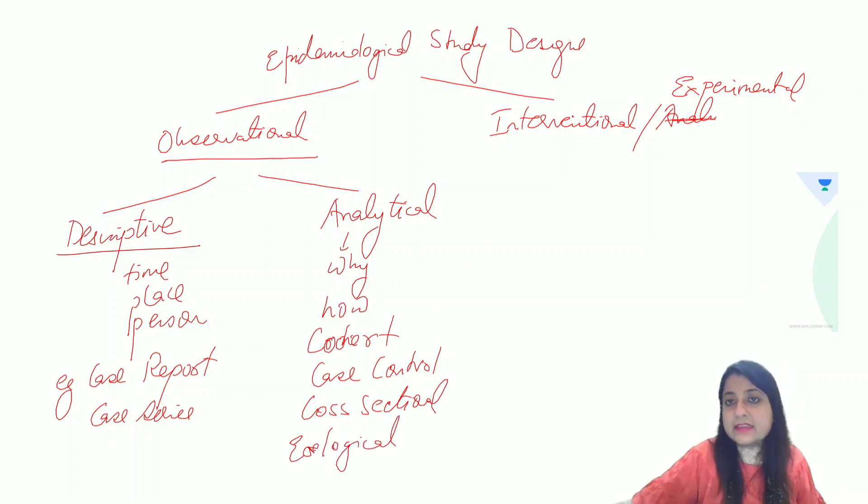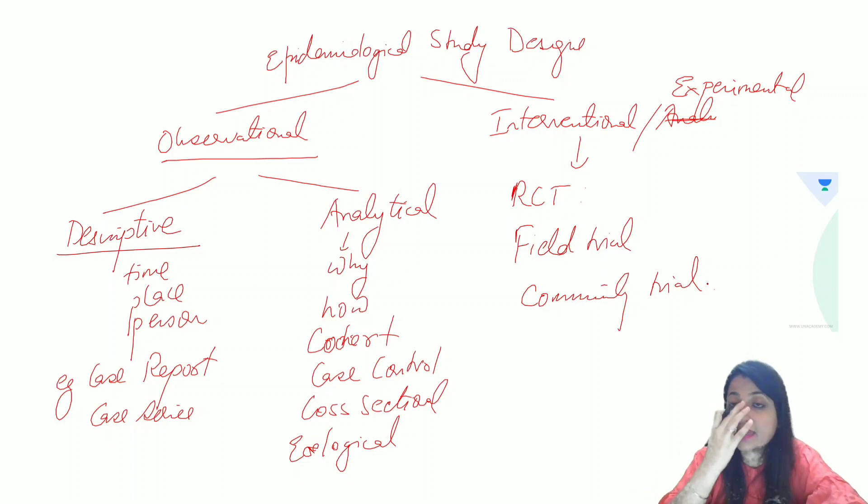These are all analytical study designs and when we talk about interventional, it is randomized control trial, field trial and community trial. Randomized control trials are phase 3 of drug trials, clinical trials. So we are doing an intervention. Group of patients are getting a new drug and the others are not. Field trial is vaccine trial. A group of healthy individuals are getting the vaccine and the other group is not getting. Community trials are preventive trials.